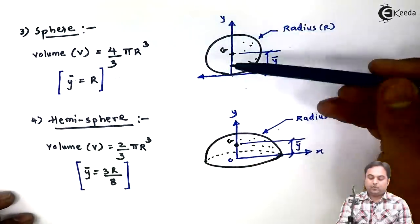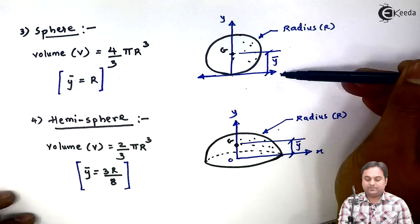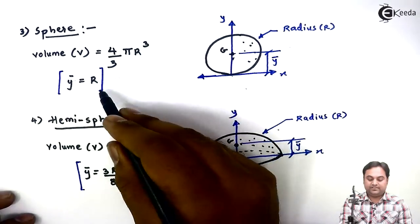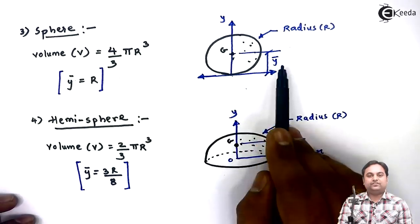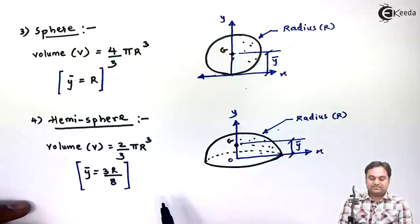For this, the CG is located at a distance of ȳ with respect to X axis, and this ȳ is nothing but the radius of the sphere. So this was the location of CG for a sphere.